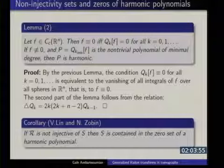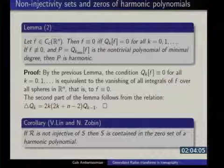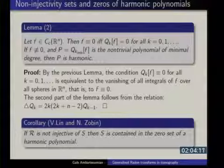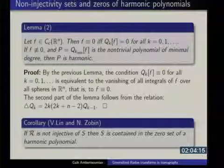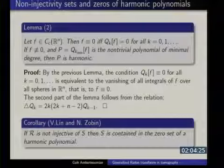It is interesting that Vladimir Lin was thinking of this problem from approximation theory. The problem can be stated as: if you try to approximate a continuous function on the plane by radial functions — functions depending only on the distance from a fixed point — what limitations on the set of centers allow you to get a dense set? It turns out these two problems are equivalent: the set of centers that gives a dense set in the space of continuous functions is exactly the complement of the non-injectivity sets.